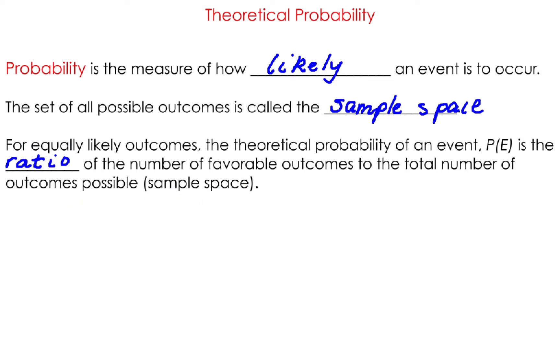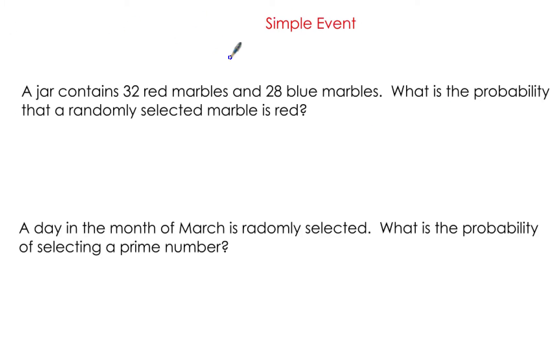Let's look at some examples. These are simple events when one event is going to occur. A jar contains 32 red marbles and 28 blue marbles. What is the probability that a randomly selected marble is red? The numerator is the number of favorable outcomes. In this case, that's red marbles, so we have 32.